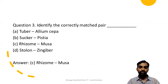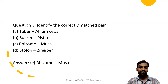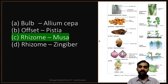Next, identify the correctly matched pair: tuber-Allium cepa, sucker-Pistia, rhizome-Musa, stolon-Zingiber. Zingiber is ginger. The correct option is C: rhizome-Musa. A rhizome is an underground stem. Musa has a rhizome, and Zingiber also has a rhizome, but the correctly matched option here is rhizome-Musa.